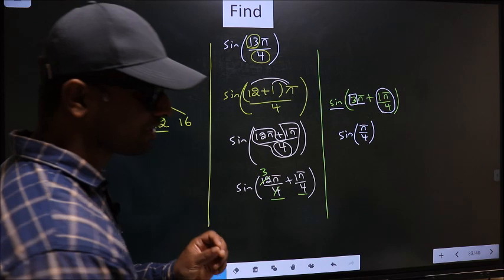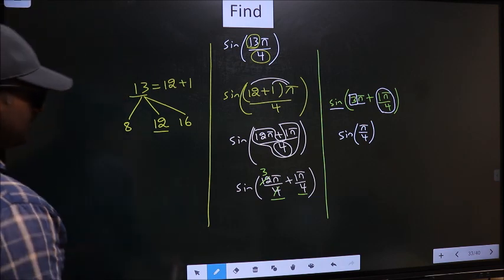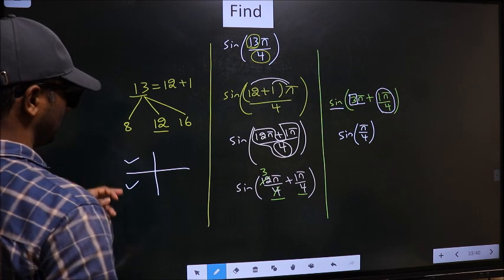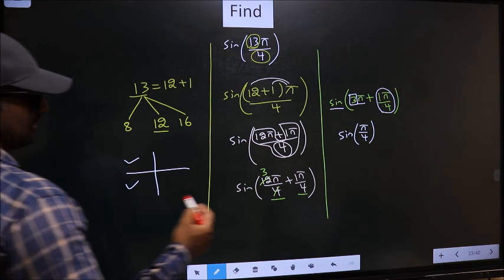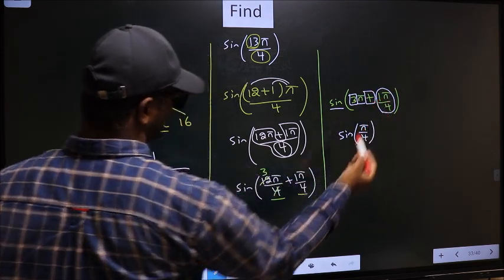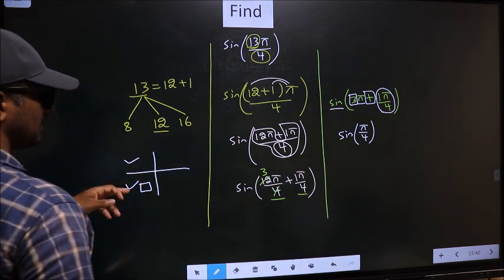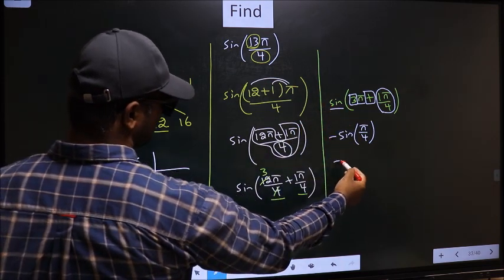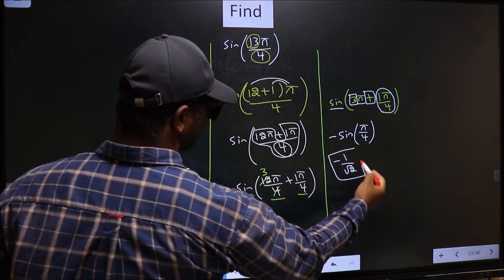3 is odd. And the odd multiples of π, they lie in second or in the third quadrant. Now to decide in which quadrant does the angle lie, you should look at this symbol. Here we have plus. So the angle lies in the third quadrant. And in the third quadrant, sin is negative. So take negative. So negative sin π/4 is 1/√2. So this is our answer.